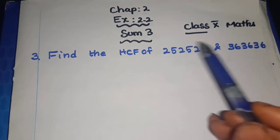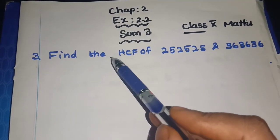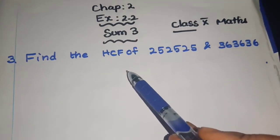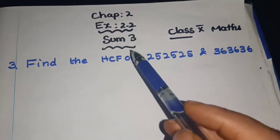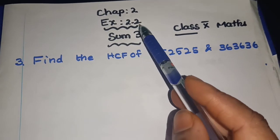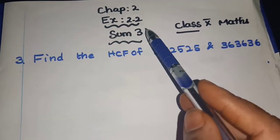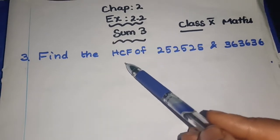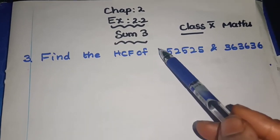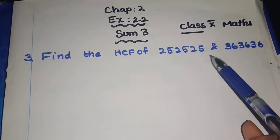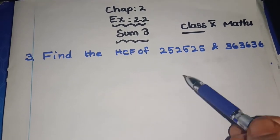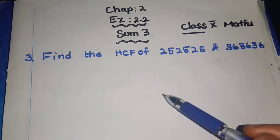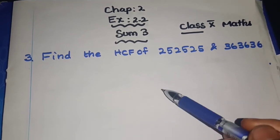Using any method - if they ask like that, you can use Euclid's division algorithm. But here in Exercise 2.2, this exercise is about the fundamental theorem of arithmetic. How you do in smaller classes - how to find HCF? You will use the L-division method and find HCF, then express it in powers. That is what the fundamental theorem of arithmetic is.